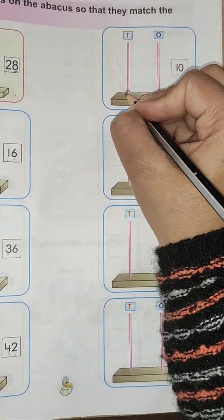Now see the next. Next one is 29. In ones place there is 9, in tens place there is 2. So in ones we will draw 9 beads: 1, 2, 3, 4, 5, 6, 7, 8, 9. And in tens place 2: 1, 2.